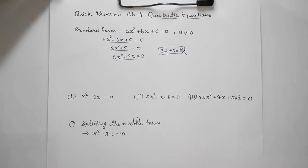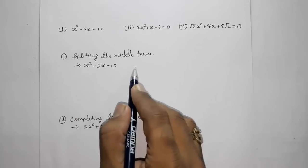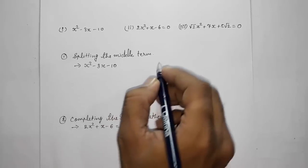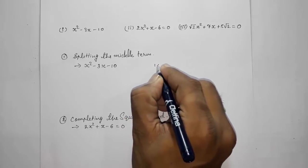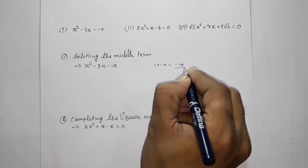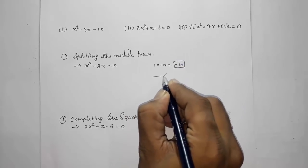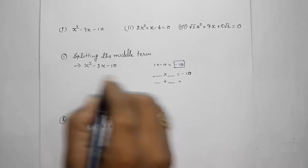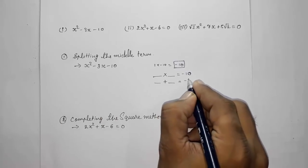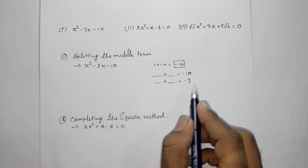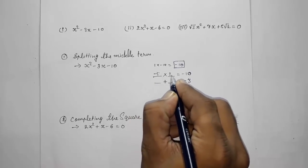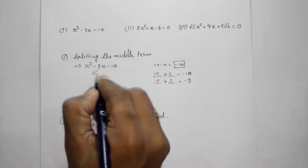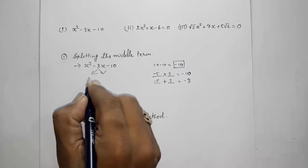For the first method — splitting the middle term — we multiply the first and last coefficients: 1 × (−10) = −10. We need to find factors of −10 such that their product is −10 and their sum equals the coefficient of the middle term, which is −3. Those factors are −5 and +2, since −5 × 2 = −10 and −5 + 2 = −3.